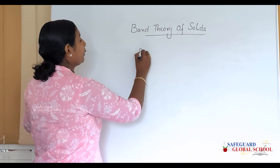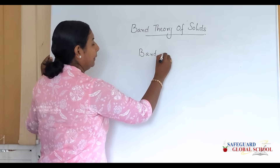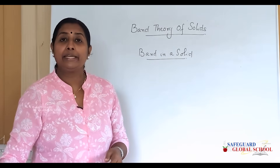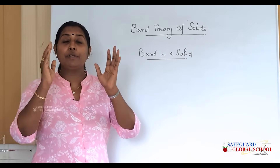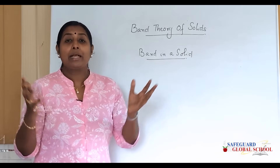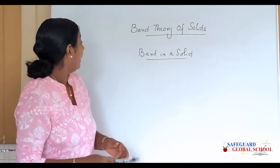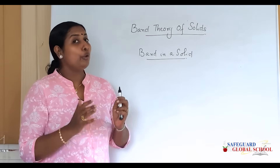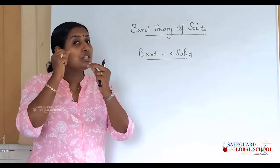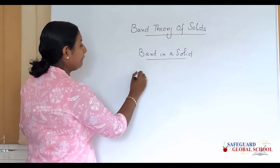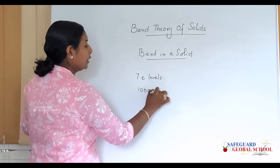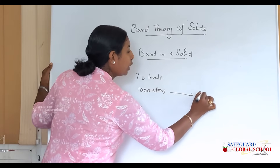What is the concept of a band in a solid? As we have studied in atoms, every nucleus is surrounded by electrons at different energy levels. When thousands of atoms combine to form a solid, according to Pauli's exclusion principle, no two electrons can have the same quantum number, so every electron has a slightly different energy level.